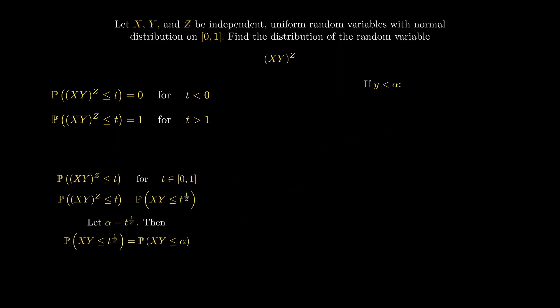Now, if y is less than alpha, then xy will always be less than alpha, so we can calculate this probability using a simple double integral giving us alpha.